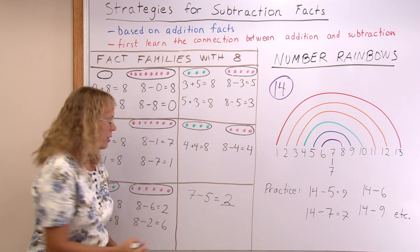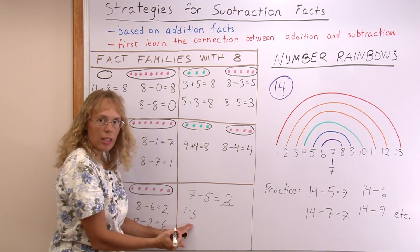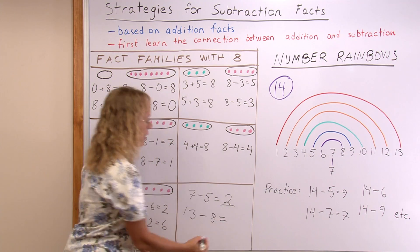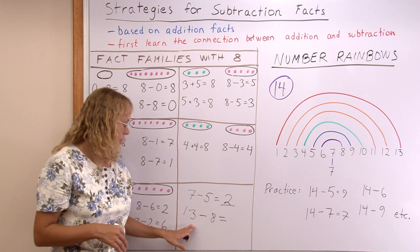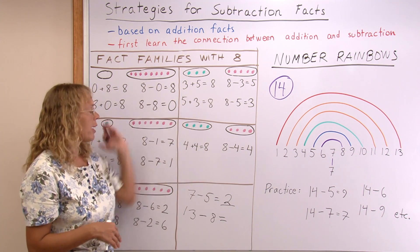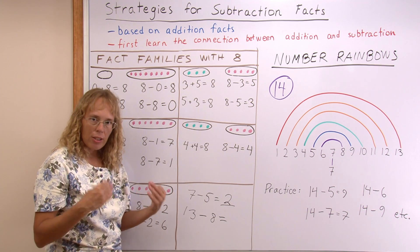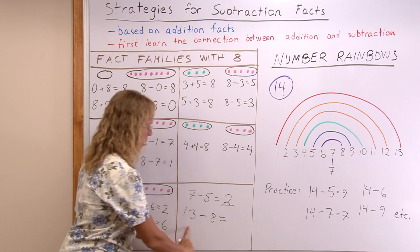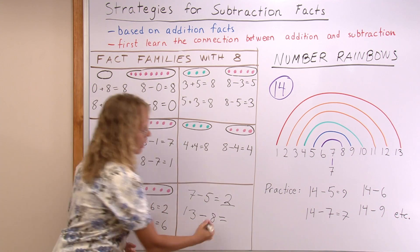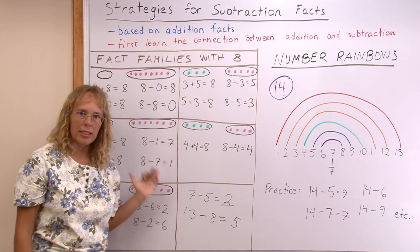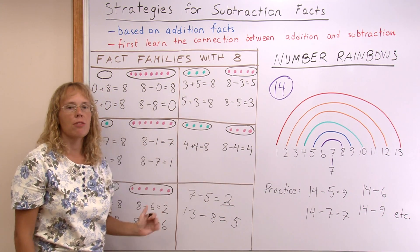And the same works, same idea works even if you have the teen number here, 13 minus something. They can still learn the fact families for 13 in the same way. And then think, okay, what numbers was it that make 13? 8 and something makes 13. What fact family was it? 8 and 5 makes 13, okay? So that's the main basis for learning subtraction facts.